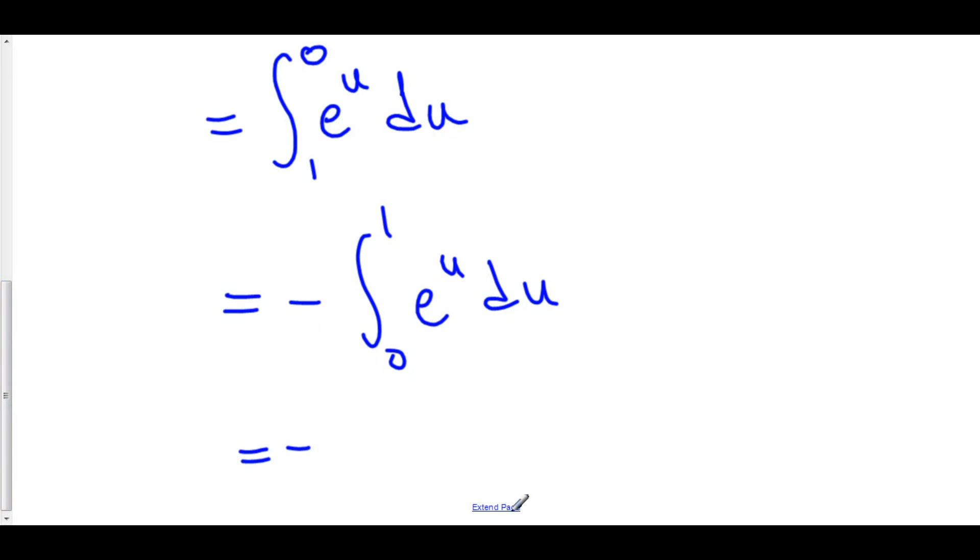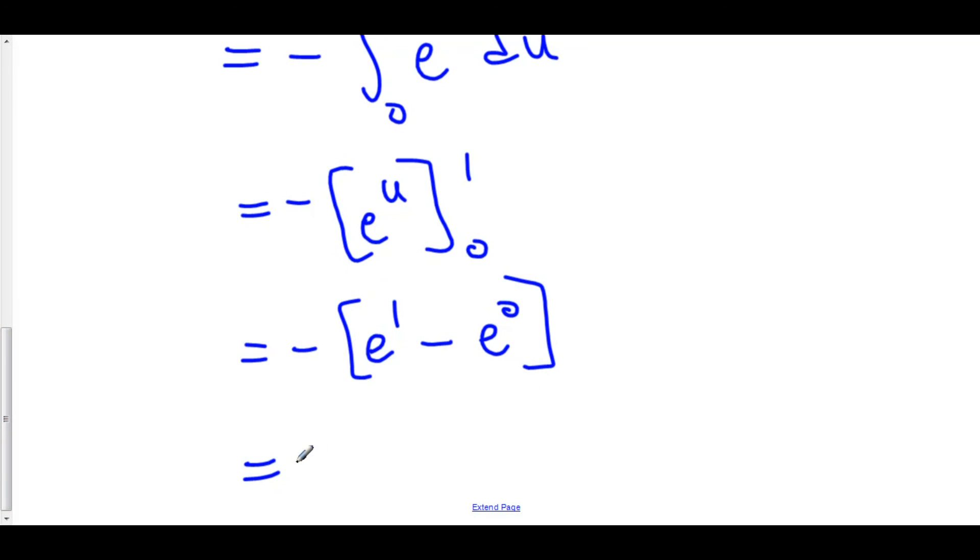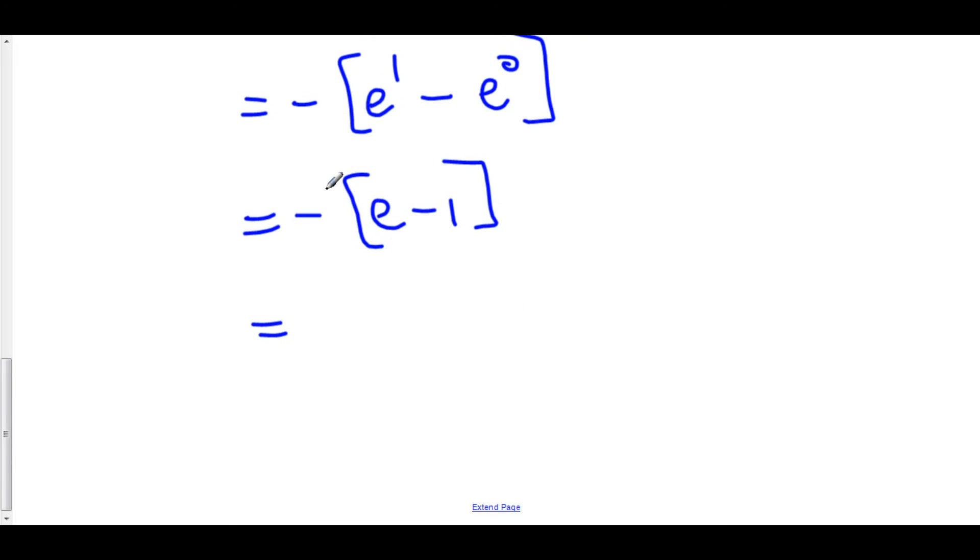And the antiderivative of e to the u is e to the u, and we're going from 0 to 1. We'll keep the negative outside. e to the 1 minus e to the 0. This is the negative, e to the 1 is e minus e to the 0 is 1. Distribute the negative. This is negative e plus 1, or just 1 minus e. And this is the answer.